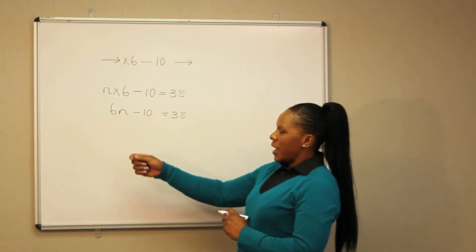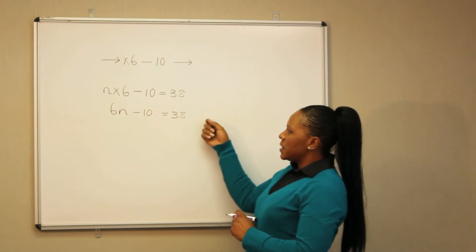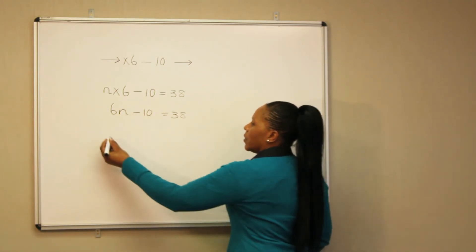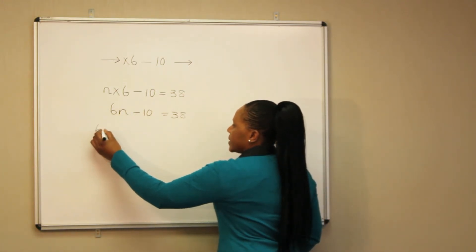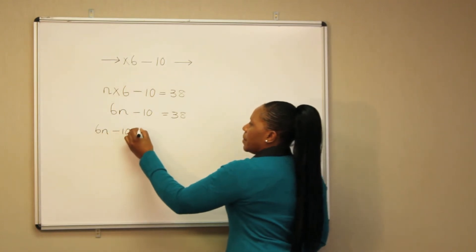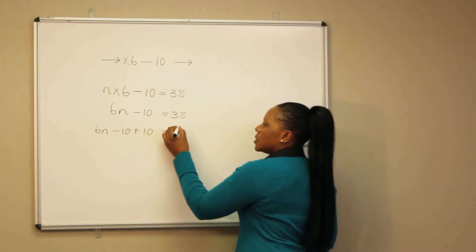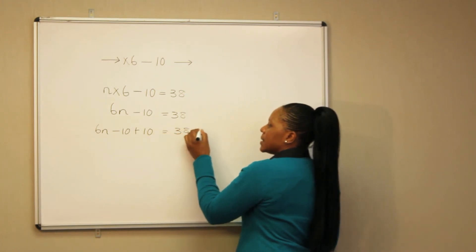Since we want to solve for n, we are going to move 10 to the other side, meaning we are going to add 10 to both sides. So, 6n minus 10 plus 10 is equal to 38 plus 10.